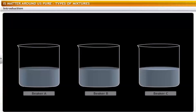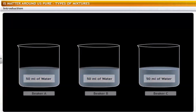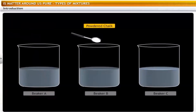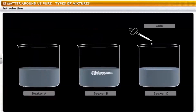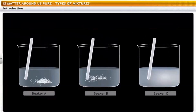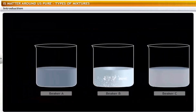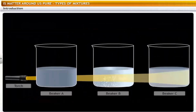Take three beakers with 50 milliliters of water in each. Add a spatula of sugar crystals to beaker A, a spatula of powdered chalk to beaker B, and a few drops of milk to beaker C. Stir well. Particles can be seen in beaker B but not in A or C. When you direct a beam of light from a torch through the beakers, the path of light is visible in case of B and C but not in A.